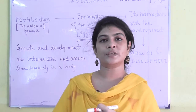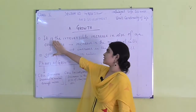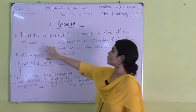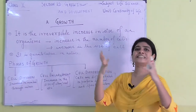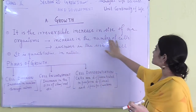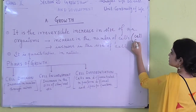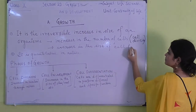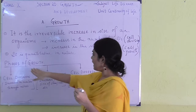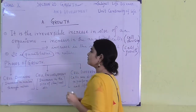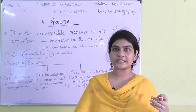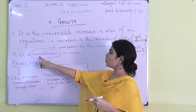Growth is the irreversible increase in the size of organisms. In simple words, it is the increase in size of the organism and also in the number of cells through cell division, and increase in the size of cells through cell growth. Growth is quantitative in nature — meaning it is measurable. You can measure the size of a cell, how many cells there are, you can measure height, you can measure weight.